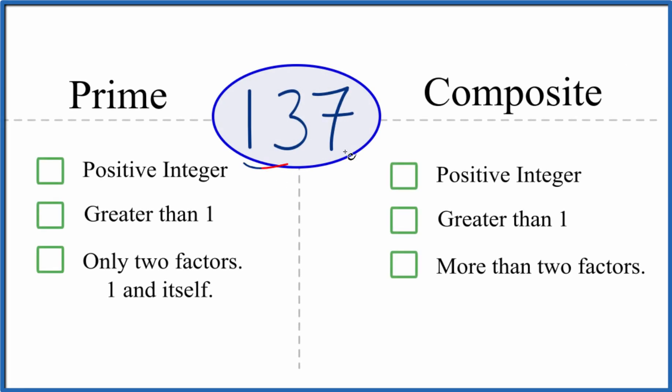The question is whether 137 is a prime number or a composite number. And here's how you tell. So first off, let's see whether 137 is prime.